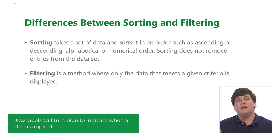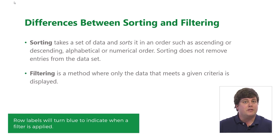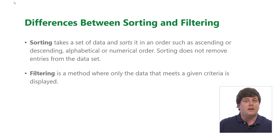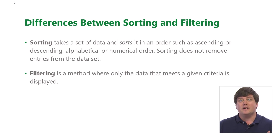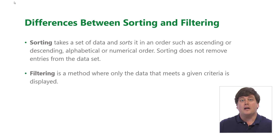Filter criteria can include: greater than something, less than something, equals something, doesn't equal something. With dates, you can do between. With text columns, you can do begins with, ends with, or contains — so you could filter out everything that doesn't have a .com in it, stuff like that.